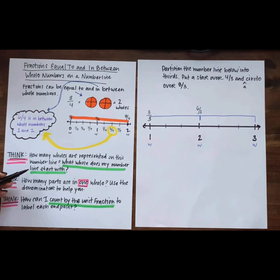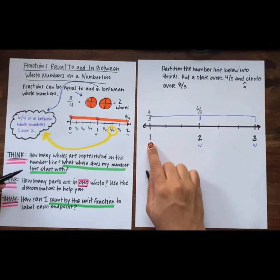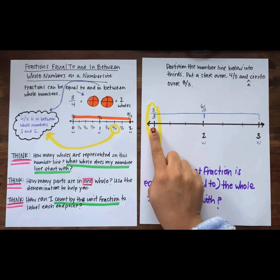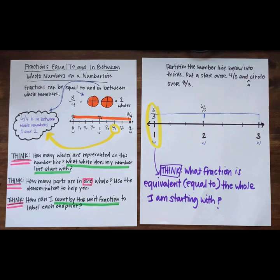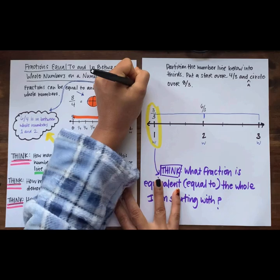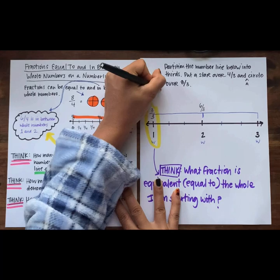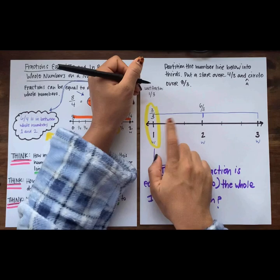When we start with whole numbers, we have to think: what whole does my number line start with, and what fraction is equivalent to the whole that I'm starting with? Now that we've labeled the start of our number line, what can we count by to label the rest of our endpoints? We can count by thirds because the unit fraction is one-third. We know this because each of our wholes has been partitioned into three equal parts.